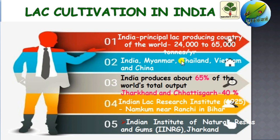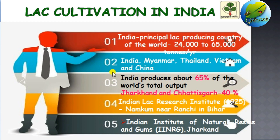India produces around 65% of the world's lac production. Our neighboring countries like Myanmar, Thailand, Vietnam, and China are also involved in lac production. The major producing states in India are Jharkhand and Chhattisgarh, contributing around 40% of the whole production in India.